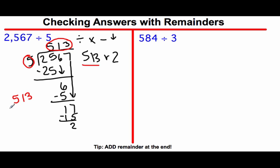So 513 times 5. And I'm going to do my quick way of multiplying over here. I'm not going to set up a lattice, but you could absolutely set up a lattice. 5 times 3 is 15. I'm going to carry the 1, drop the 5. 5 times 1 is 5, plus 1 is 6. And 5 times 5 is 25.